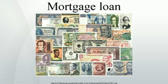A home buyer or builder can obtain financing either to purchase or secure against the property from a financial institution, such as a bank or credit union, either directly or indirectly through intermediaries. Features of mortgage loans such as the size of the loan, maturity of the loan, interest rate, method of paying off the loan, and other characteristics can vary considerably.